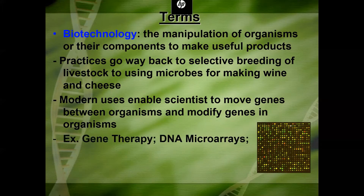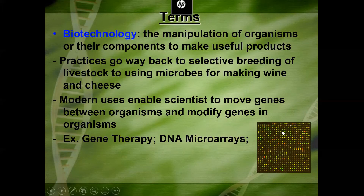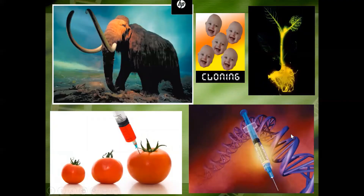Modern uses of biotechnology enable scientists to move genes between organisms and modify genes. Examples include gene therapy and DNA microarrays — which kind of look like a light bright — where each dot contains a gene or mRNA showing transcription or translation levels: green means a lot of transcription, yellow a little bit, red means no transcription. Gene cloning also fits under the umbrella of biotechnology, along with GMO foods, gene manipulation, and transferring genes from one organism to another.